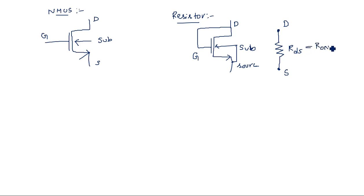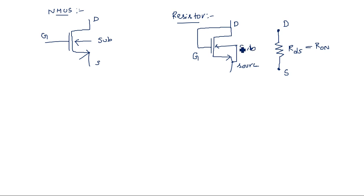Whenever you want to use a resistor in logic circuits, you must use this configuration where drain and gate are connected together, and source and substrate are also connected together. In NMOS FET operation, source and substrate are normally connected together. The substrate is not generally biased unless you want to operate in a specific region, in which case you apply a substrate voltage VSB. Otherwise, source and substrate are connected together.